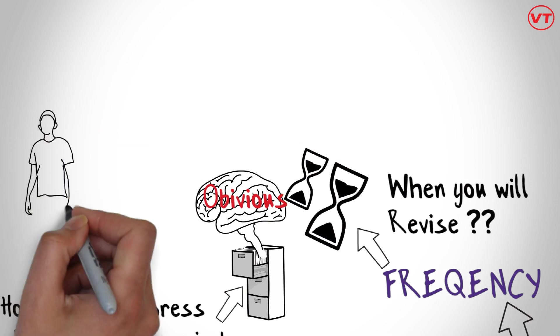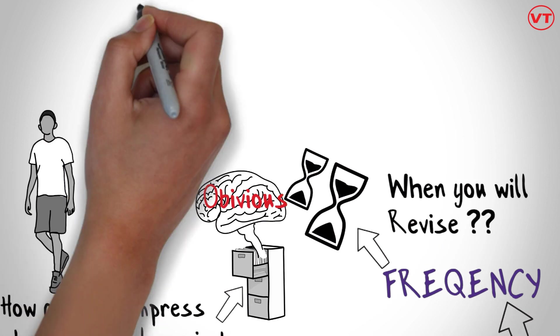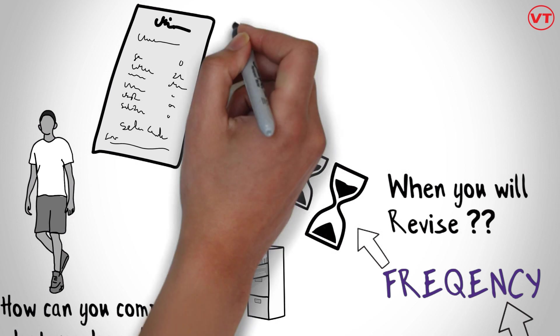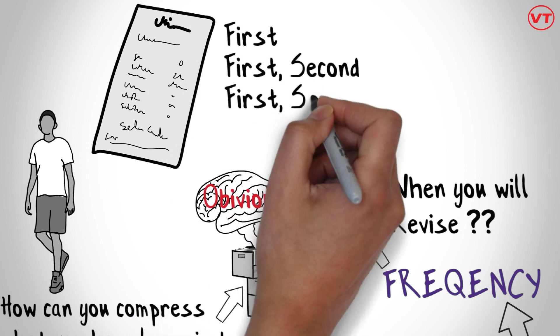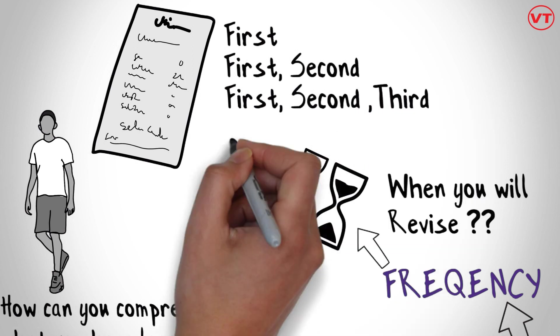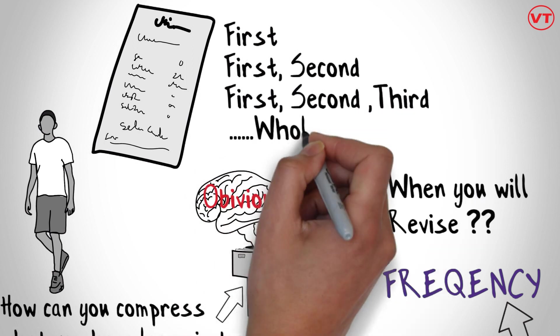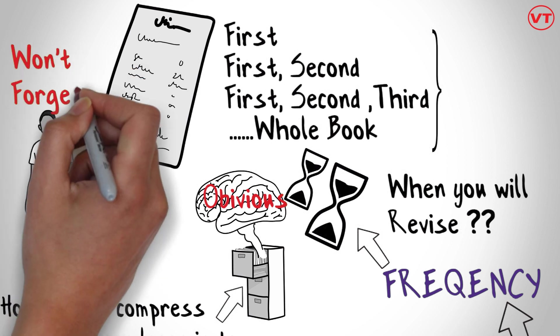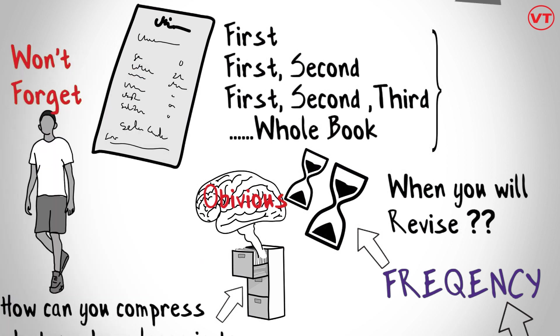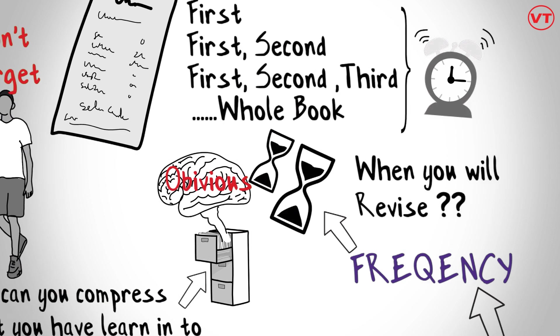In college days I remember we used to have scheduled tests initially on first chapter, then after some days first and second chapter, then after some days first, second, third chapter, and this way school used to cover the entire book. This is actually a demonstration of frequency when school used to make sure that the students won't forget what they have learned recently. So schedule the alarm in your mobile for reminding you of revising your one page summary.